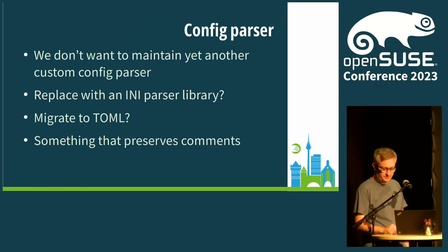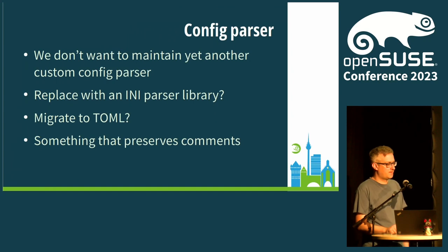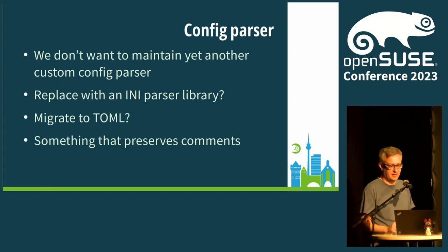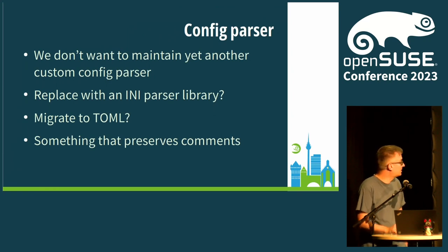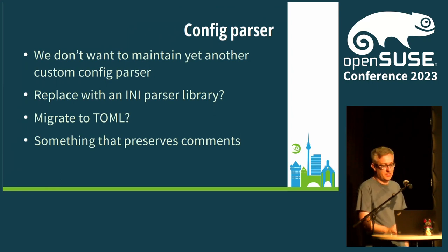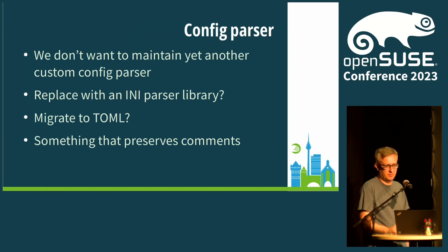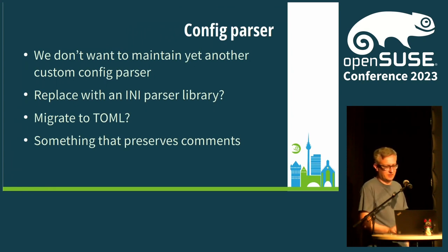About config parser: OSC has a custom config parser because the Python standard library doesn't offer one that preserves comments on writing. This is highly needed because we have a template with commented options in the oscrc. We need to preserve comments, but how to do it we still don't know. We are considering moving to another INI parser library or simply moving to TOML or something else. This is the future and probably not that critical, so maybe we'll get to that later.